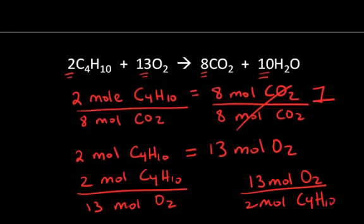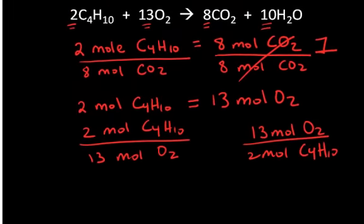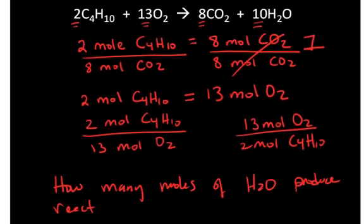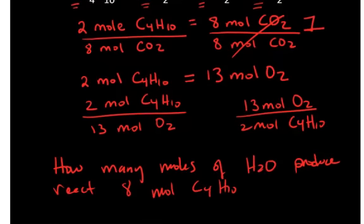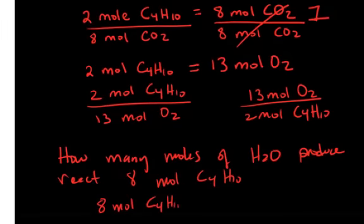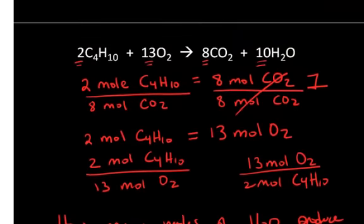What I have essentially done here is used these stoichiometric relationships to create conversion factors to convert from one reactant or product to another across a chemical change. For example, how many moles of water will I produce if I react eight moles of butane? Since I know there's a relationship between the amount of butane consumed and the amount of water produced from the stoichiometric relationships, I can convert from moles of butane — given eight moles of butane C4H10 — using a conversion factor from the balanced chemical equation, converting from moles of butane to moles of water.